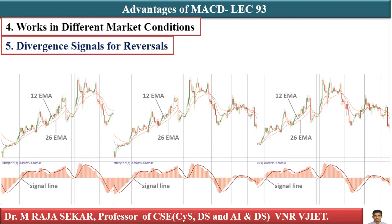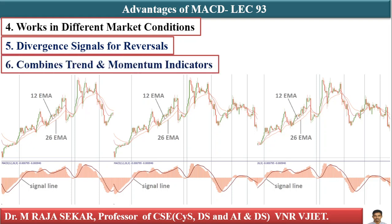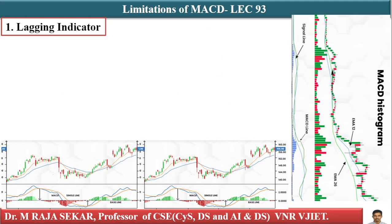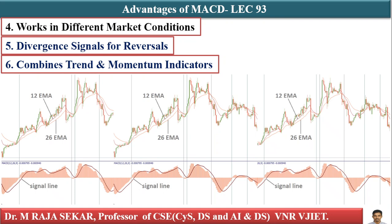Fifth, divergence signals for reversals: bullish divergence means price makes a lower low while MACD makes a higher low, suggesting a potential uptrend. Bearish divergence means price makes a higher high while MACD makes a lower high, suggesting a possible downtrend. Sixth, MACD combines trend and momentum — unlike single moving averages, it provides both trend-following and momentum insights, making it more effective in confirming trade signals.